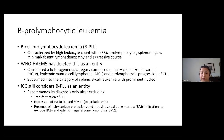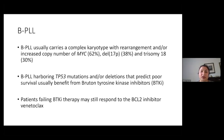The ICC still considers BPLL as an entity and recommends its diagnosis only after excluding CLL transformation, the expression of cyclin D1 and SOX11 to exclude mantle cell lymphoma, and after the exclusion of hairy surface projections on atypical lymphocytes, as well as intrasinusoidal bone marrow infiltration — used to exclude hairy cell variant and splenic marginal zone lymphoma. BPLL usually carries a complex karyotype with rearrangement and/or increased copy number of MYC, deletion 17p, and trisomy 18. It can harbor TP53 mutations and/or deletions which usually predict poor survival, but patients usually benefit from BTK inhibitors, and those who fail may still respond to venetoclax.